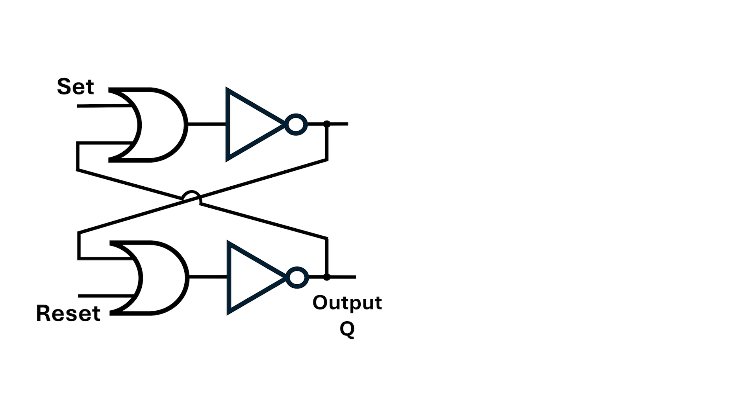In the previous video, there was a mistake. In this graphic, I said that when set and reset are both low, the output Q remains unchanged. When I assert reset, the output goes low, and when I assert set, the output goes high.